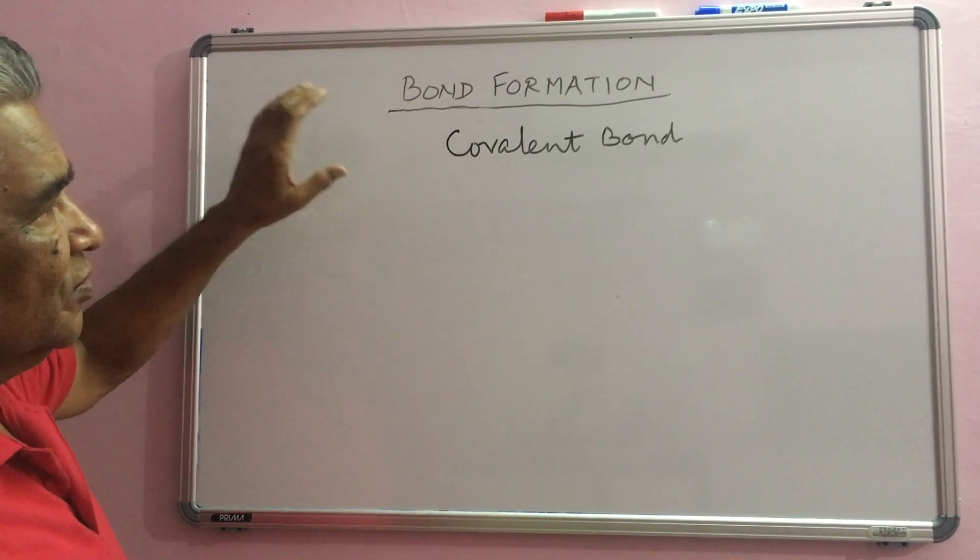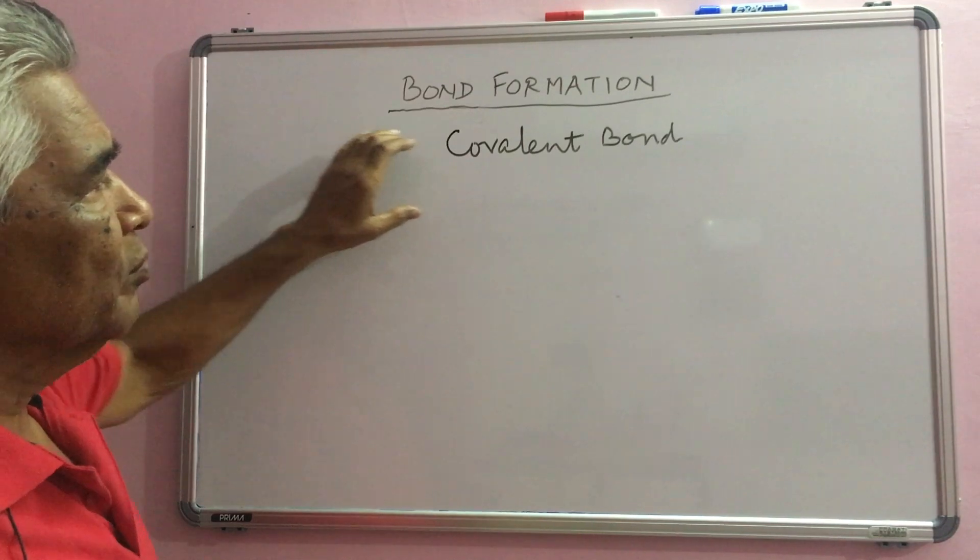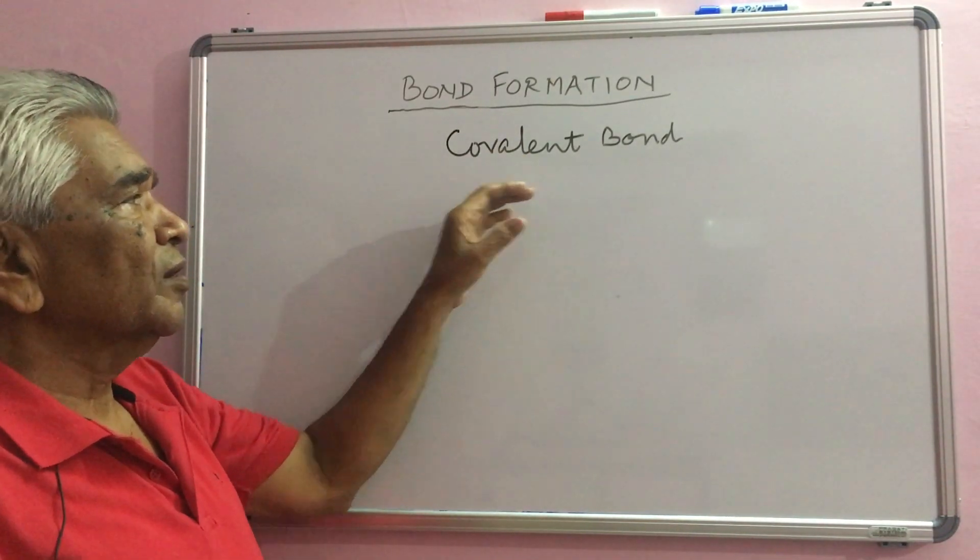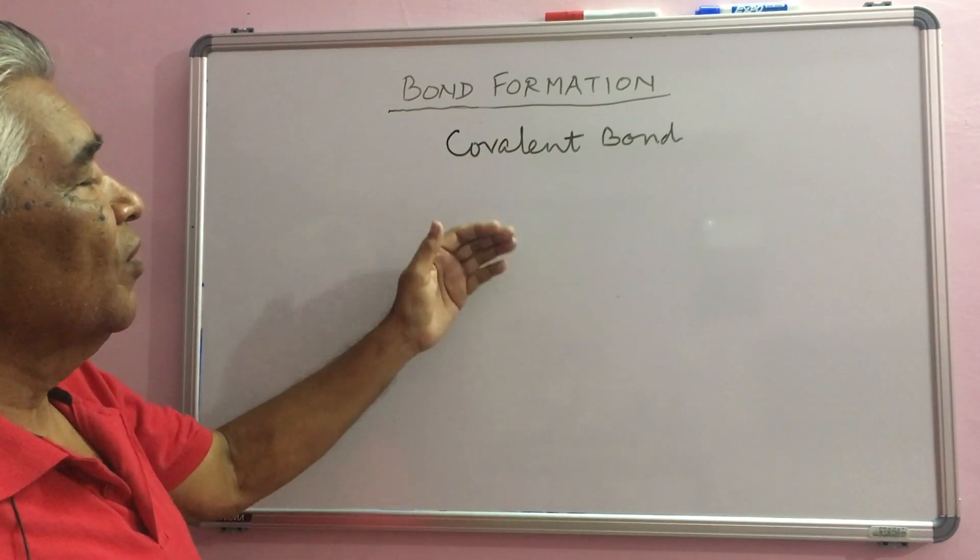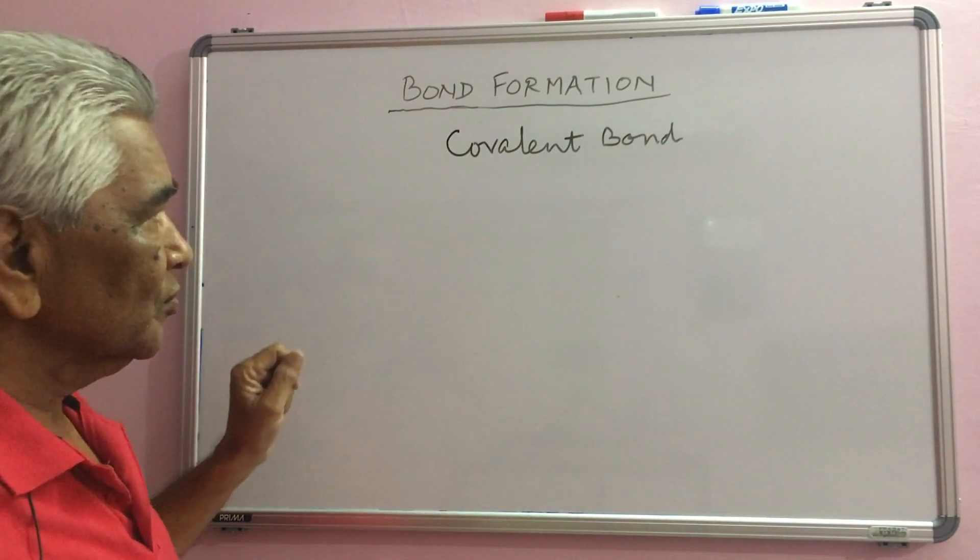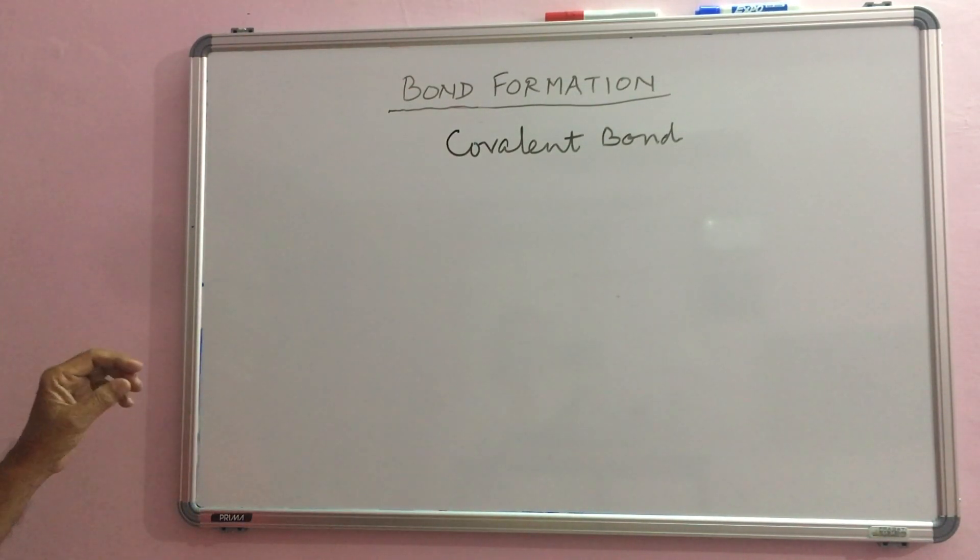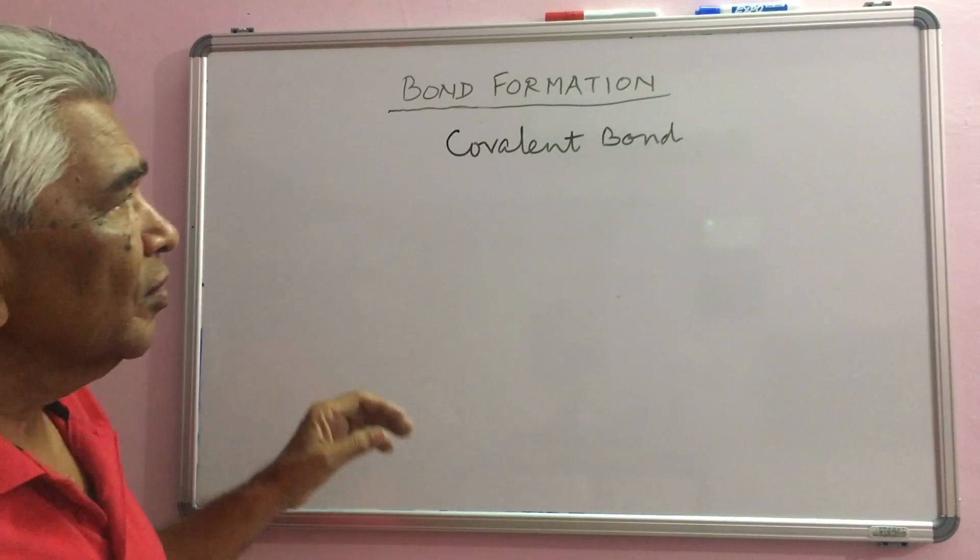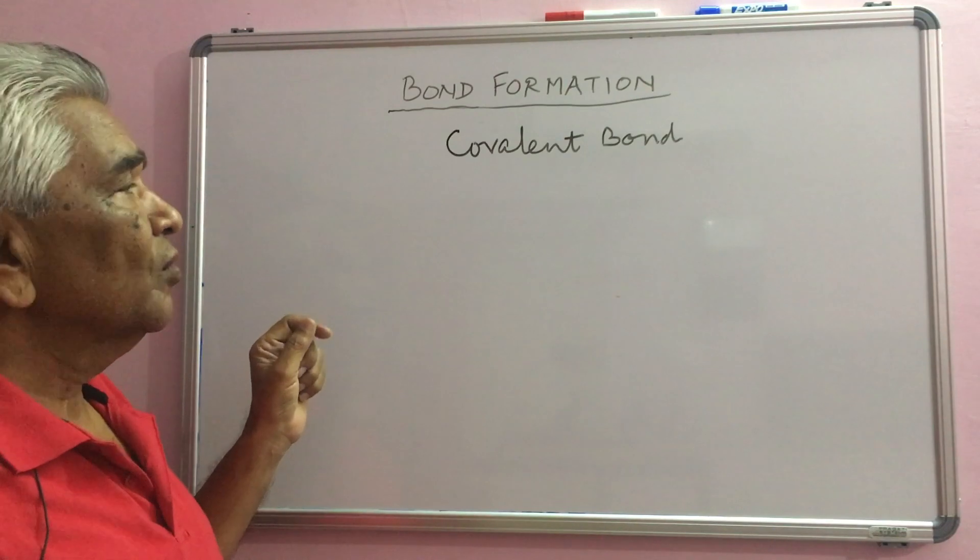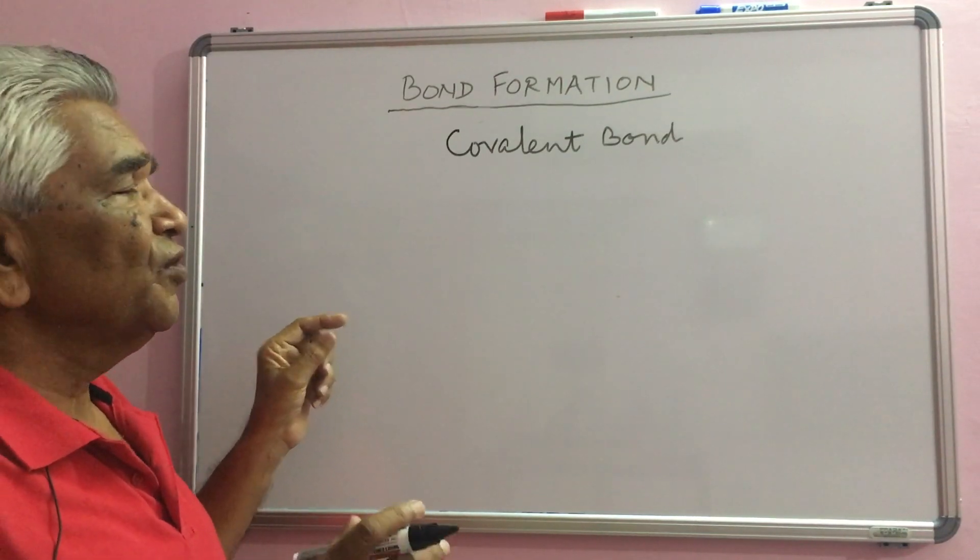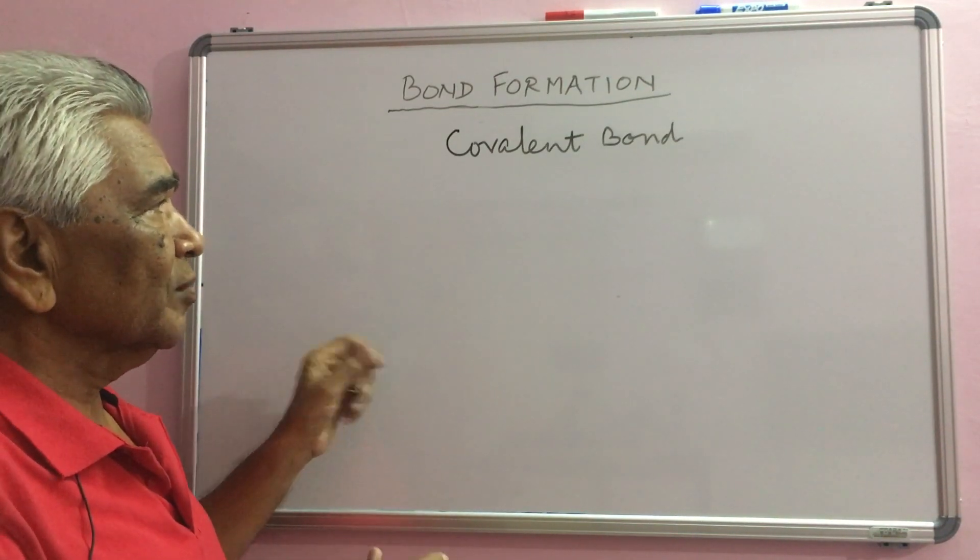We come across mainly covalent bonds in organic compounds, so we will discuss here the formation of covalent bonds. Covalent bond is formed by sharing of two electrons, one from each bonding atom.